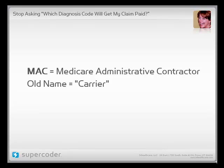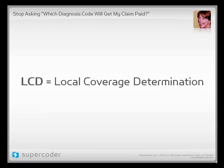How do I get my claims paid? First of all, any diagnosis that you report on a claim must be clearly documented in the patient's chart — not selected because it's a covered diagnosis. In some cases, an LCD will list a very general or unspecified diagnosis code as being payable, whereas your physician has documented a more specific diagnosis which isn't in the LCD. In these cases, you should still report the documented diagnosis.